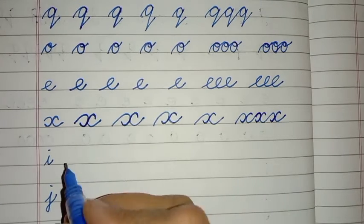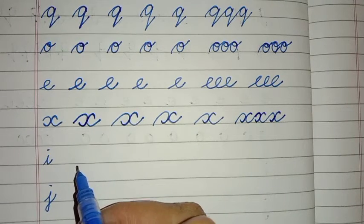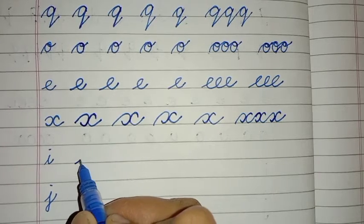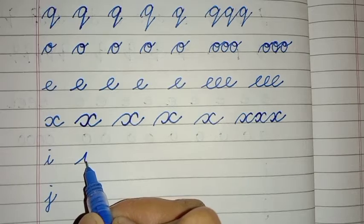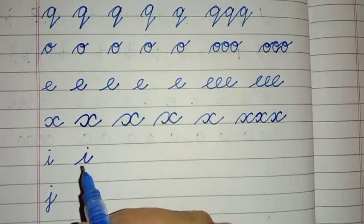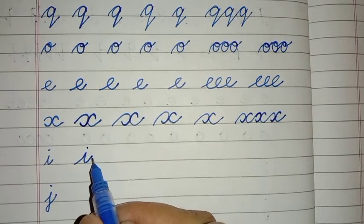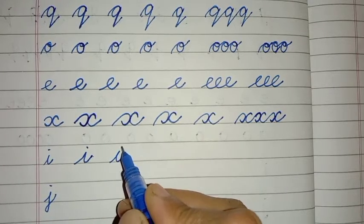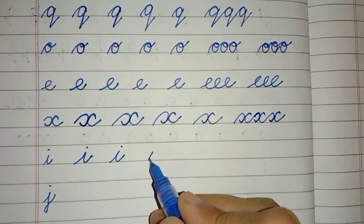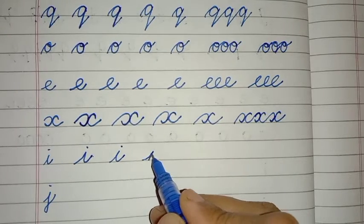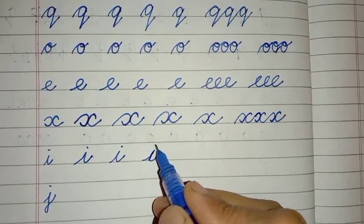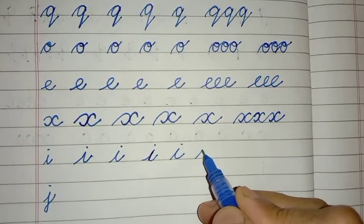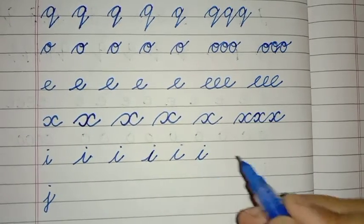Let us practice I today. So I is very simple. You will start, the starting is just like C, but you will turn from here. Like this. So you can see here is the trunk and here is the tail. It is little slant. So it should be little slant. It will fit in half line only.